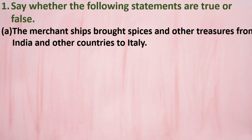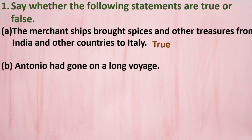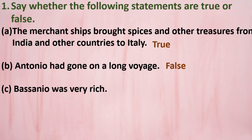First statement: 'The merchant ships brought spices and other treasures from India and other countries to Italy.' This is true. Second statement: 'Antonio had gone on a long voyage.' No — he was waiting for his ships in the beginning of the story. So this is false. Third statement: 'Bassinio was very rich.' No — he was very poor. This is also false.